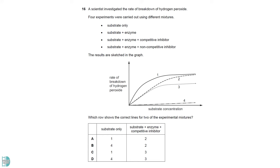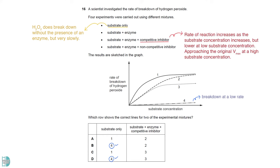Without the presence of an enzyme, hydrogen peroxide does break down, but very slowly. So 4 is the line for substrate only. In the presence of a competitive inhibitor, the rate of reaction increases as the substrate concentration increases. The rate is lower at first, but it will approach the original Vmax at a higher substrate concentration. 2 is the line for this. A non-competitive inhibitor lowers the rate of reaction and cannot be overcome by increasing substrate concentration. It is shown by 3.